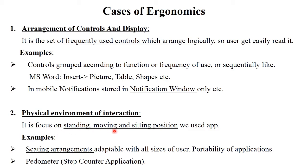The physical environment of interaction focuses on standing, moving, and sitting positions while using an application. Examples include sitting arrangements adaptable to all user sizes. Mobile, tablet, and laptop are portable applications — meaning you can move with them. A desktop computer is not a moving application. According to ergonomics, laptops, tablets, and mobiles are easy to use because they are portable. Another example is a pedometer — a step counter application that counts steps while walking.